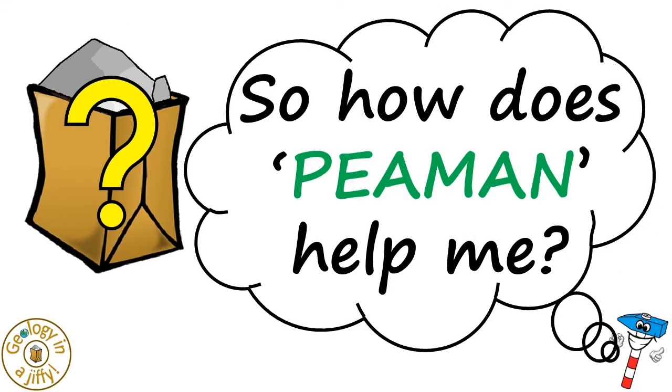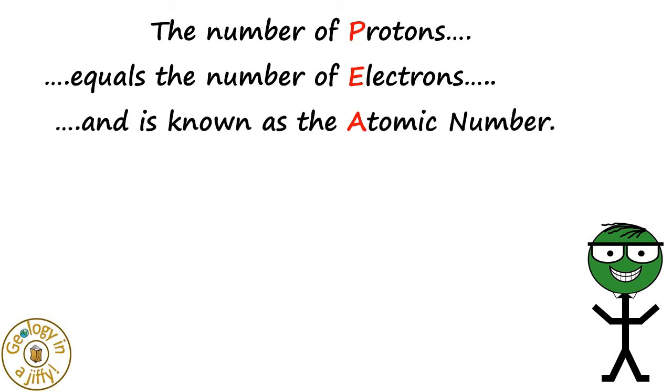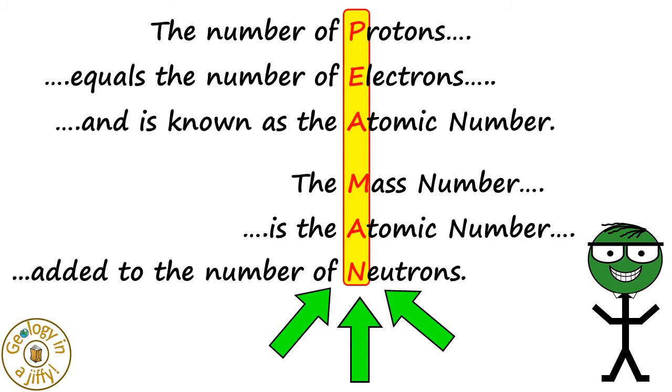So how does P-Man help me? P-Man is an acronym for the number of protons equals the number of electrons and is known as the atomic number. The mass number is the atomic number added to the number of neutrons. P-Man!